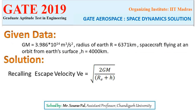Given data: GM has been given as 3.986 x 10^14 m³ per second squared. Radius of Earth is 6,371 km. The space vehicle is flying at an altitude of h = 4,000 km from the Earth's surface.